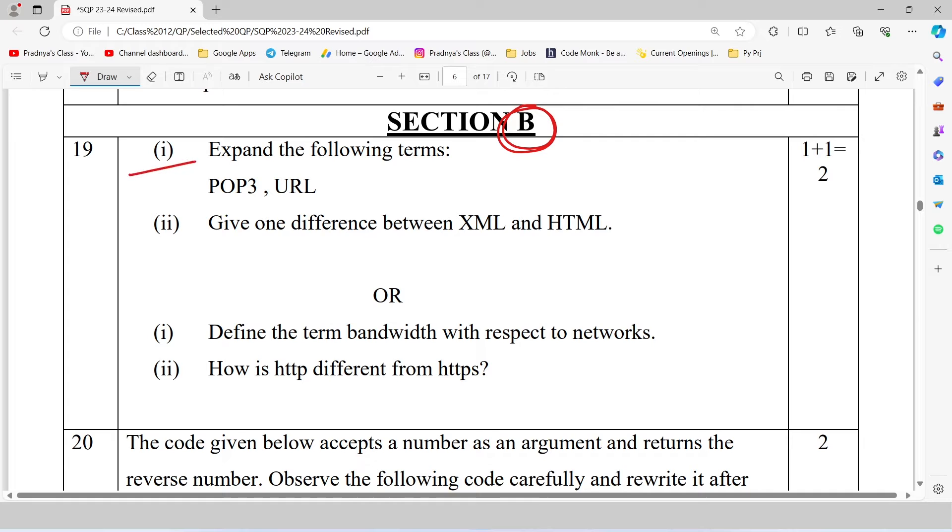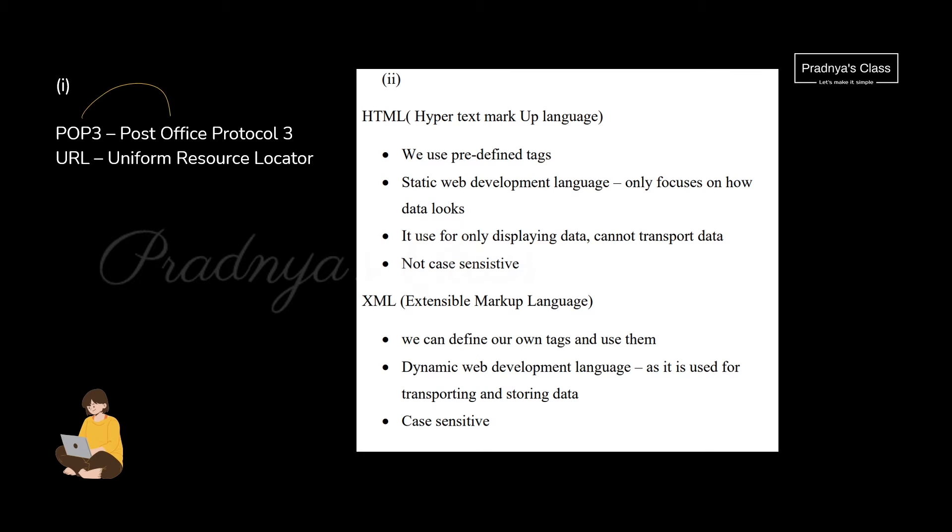Here is the first question. Expand the following term. And there is one more question, give one difference between XML and HTML. Look at the full form of POP3. It is Post Office Protocol 3. And URL is Uniform Resource Locator.